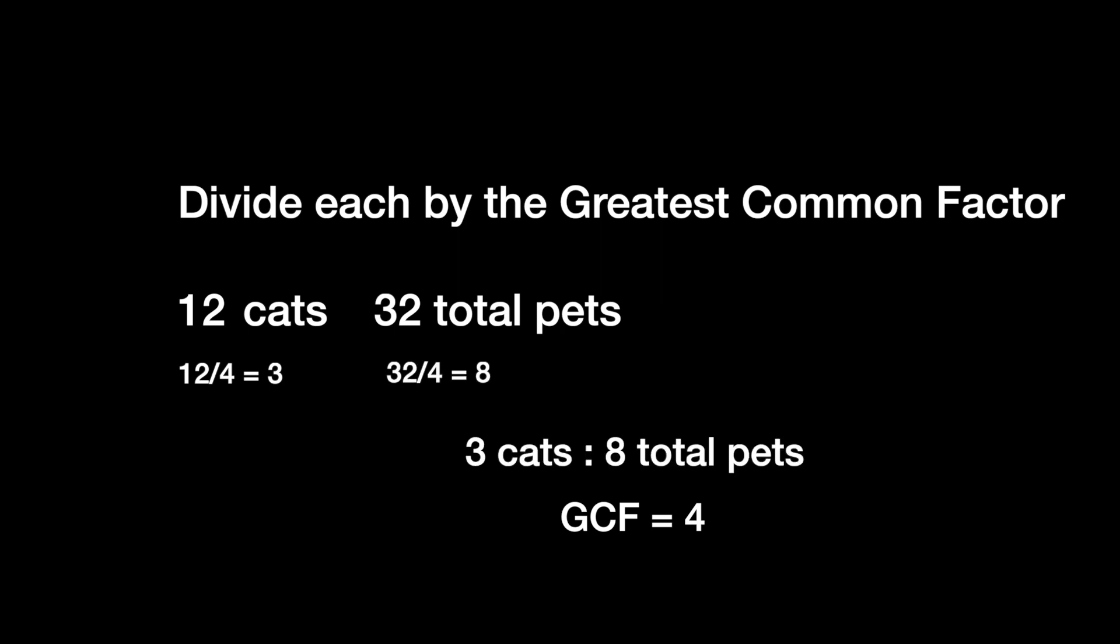So, our simplified ratio is 3 to 8. There are 3 cats to our total number of 8 pets in our shelter.